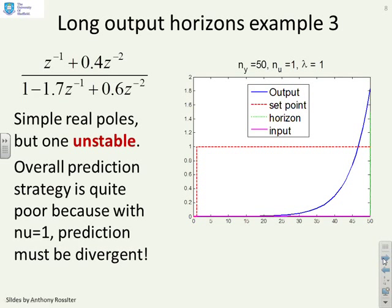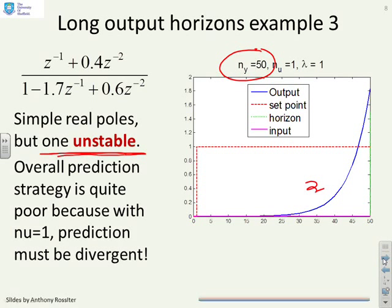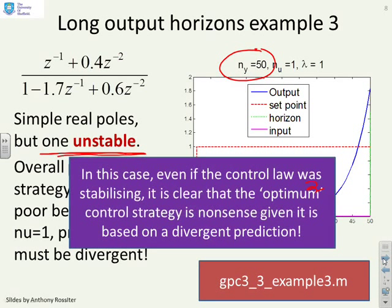Example 3. In this particular case, you remember one of the poles was unstable. And you look at this and you say it still doesn't look good. I've used a larger output horizon, but my prediction here is still basically rubbish. So in this case, even if the control law that you end up with when you iterate every sample is stabilizing, it's clear that the optimum control strategy is nonsense given it's based on a divergent prediction, and I would not trust it.